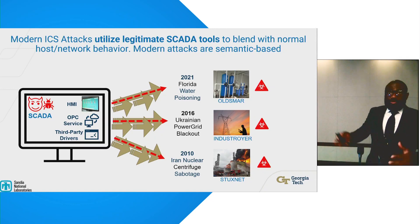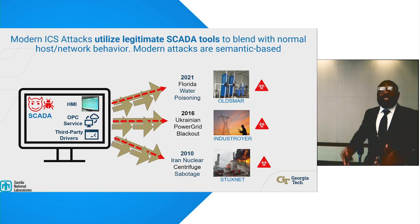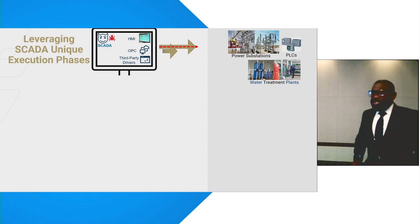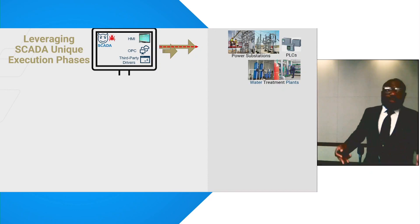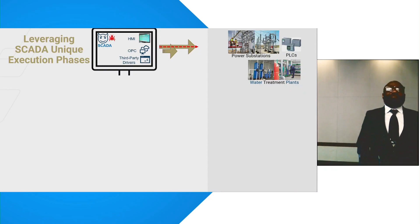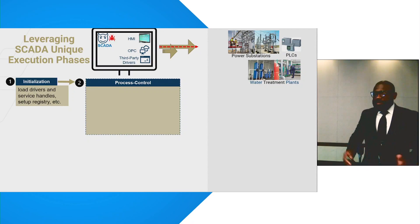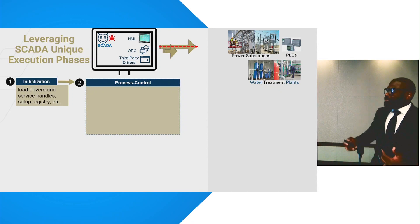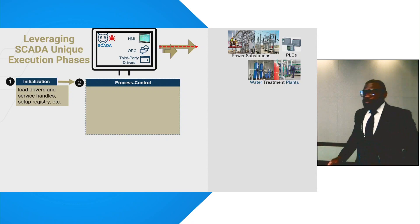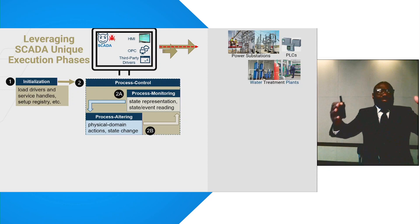Our threat model is that the attacker has compromised SCADA and wants to disrupt the physical process. Our approach is to leverage the unique execution phases in SCADA operation to identify the limited set of legitimate system activities that control the physical world. SCADA starts with an initialization phase where it loads the device driver and sets up the network software interfaces with the PLC, then proceeds to the process control execution phase, which comprises process monitoring and process altering.